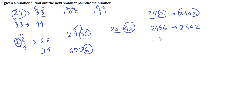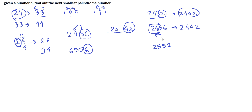In this scenario we need to modify the left part. We start from the center of the number and move outward: we increase the digit 4 by 1, making the left part 25, and then reverse it to form the right part 52. Now 2552 is larger than 2456, and thus this is the answer.